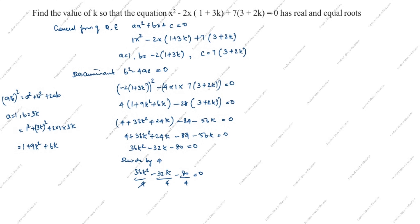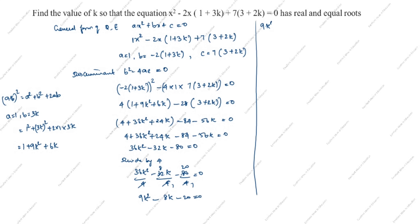36k squared divided by 4 is 9k squared. 32k divided by 4 is 8k. 80 divided by 4 is 20. So we get 9k squared minus 8k minus 20 equals 0.